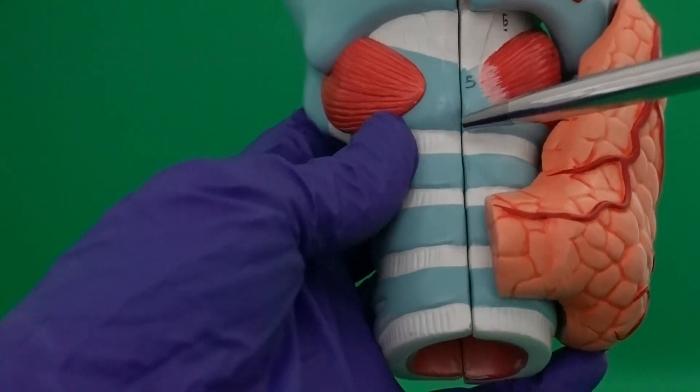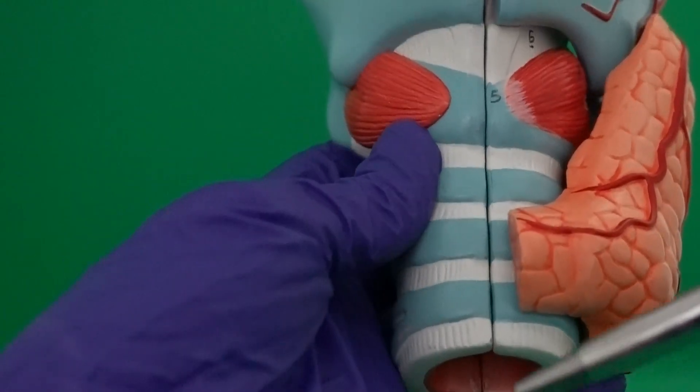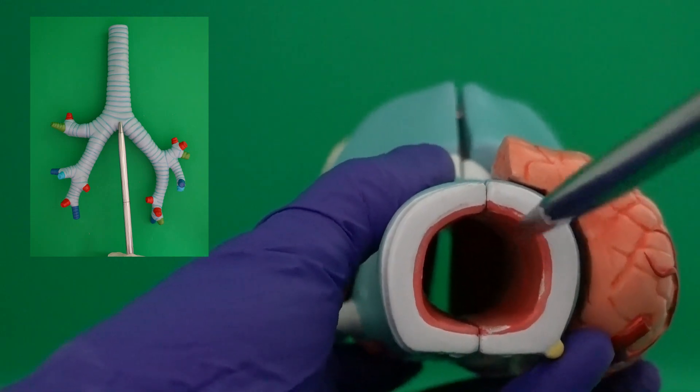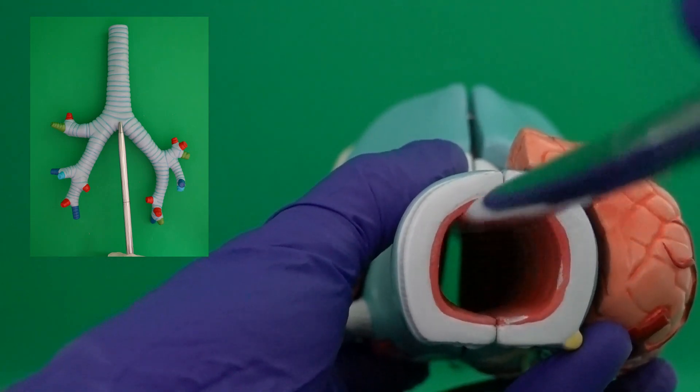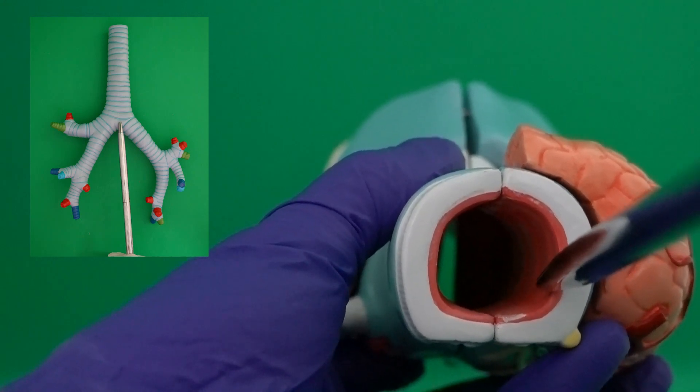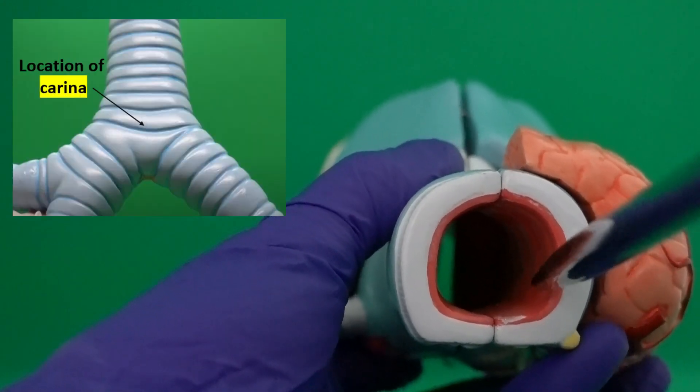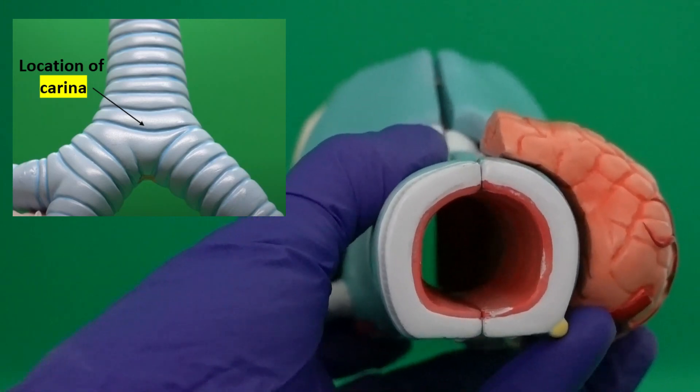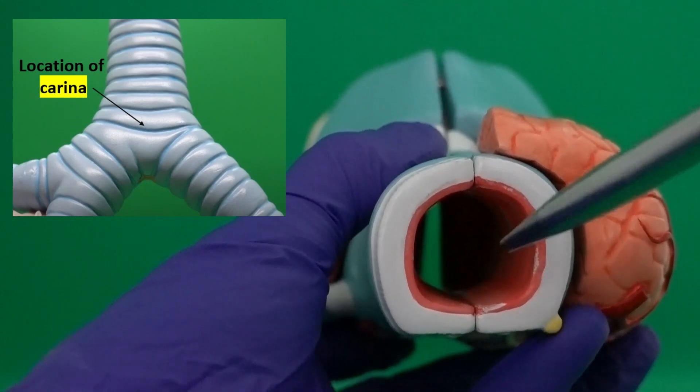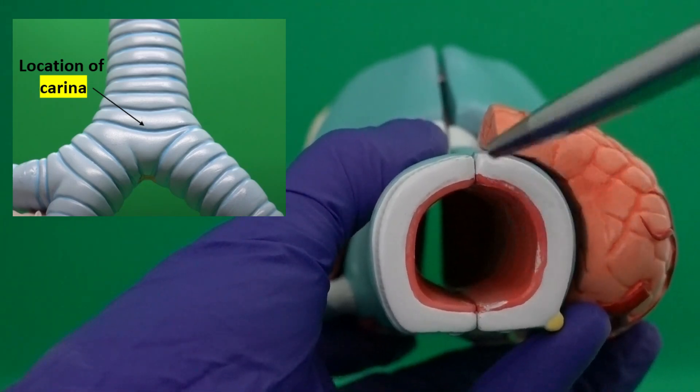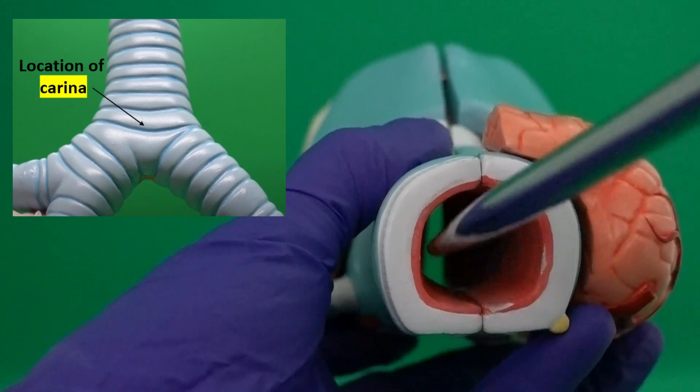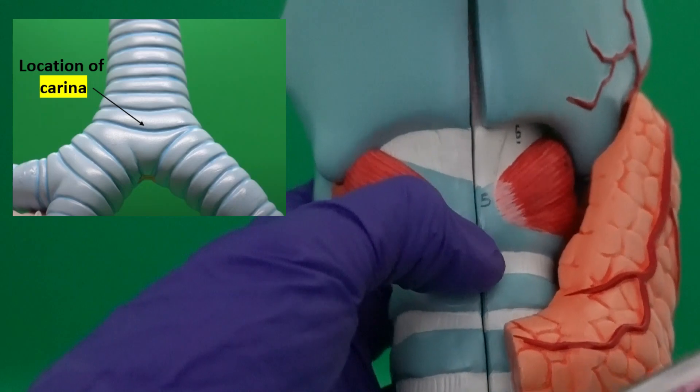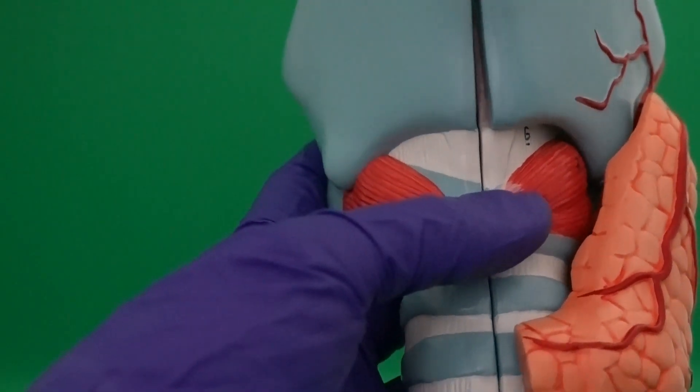When we get exactly to the end of trachea, before trachea bifurcates into primary bronchi, when we analyze the mucous membrane at the end of trachea, we notice that the mucous membrane creates a ridge, and we call that carina. The cells that we have in the mucous membrane of carina are very sensitive to detecting particles and debris. As soon as particles and debris get close to the end of the trachea, carina initiates a coughing reflex. That would be an attempt to bring those particles up and not let them enter the lungs.